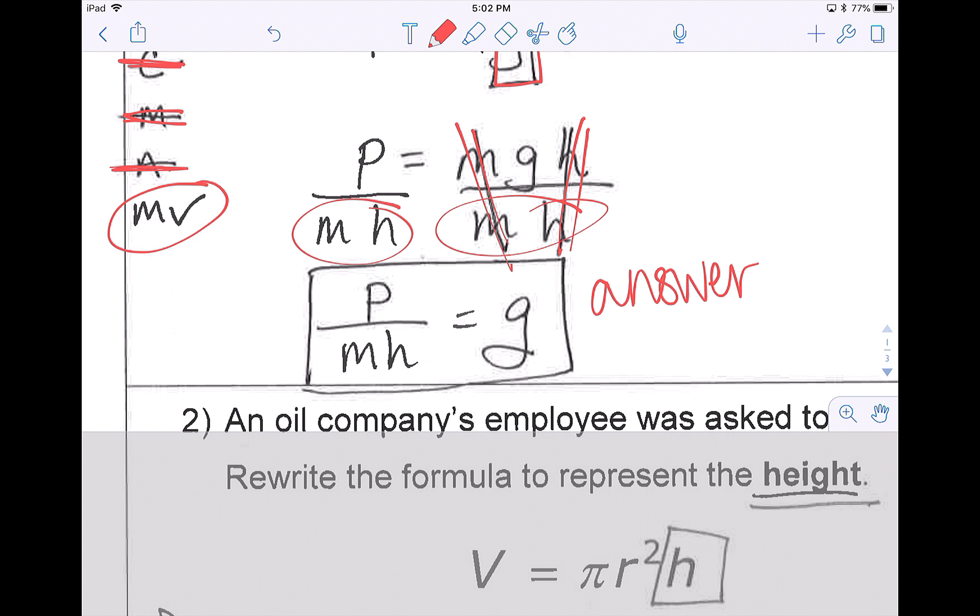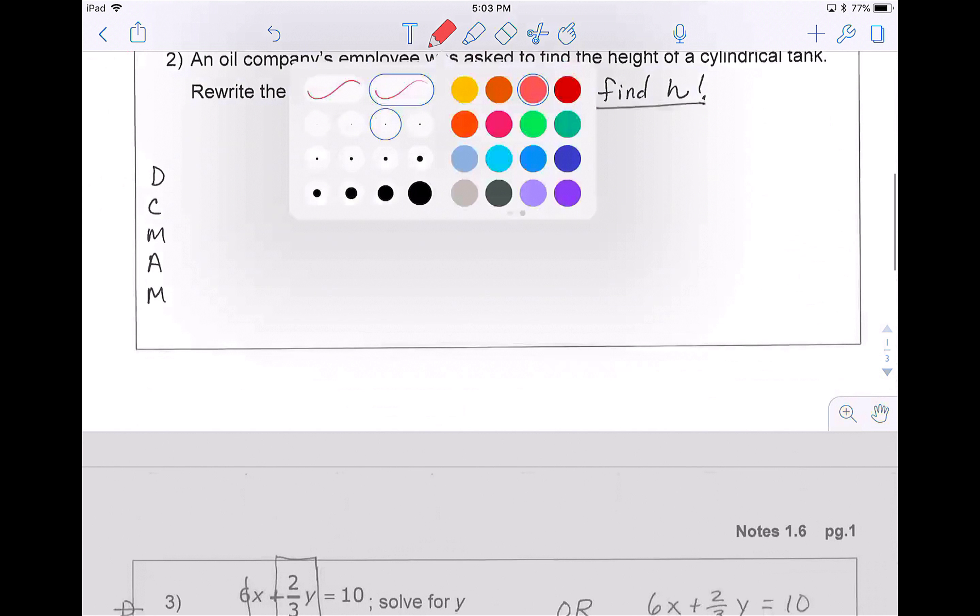Most students really like literal equations because they're easy, but also they hate them because they are kind of confusing. Because here we only did one step and our answer looks really ugly, so most people think, no, I'm not done. That was too easy. But with literal equations, if you have what you need, then you're done. Don't make it more complicated.